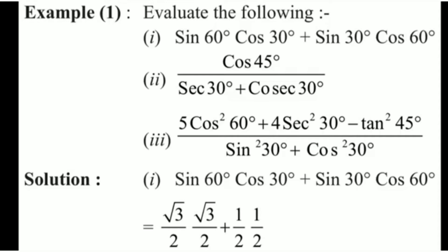First part: sin 60° · cos 30° + sin 30° · cos 60°. Second part: cos 45° divided by (sec 30° + cosec 30°). Third part: (5 cos² 60° + 4 sec² 30° − tan² 45°) divided by (sin² 30° + cos² 30°). To solve these sums we have just to use the basic algebraic operations.